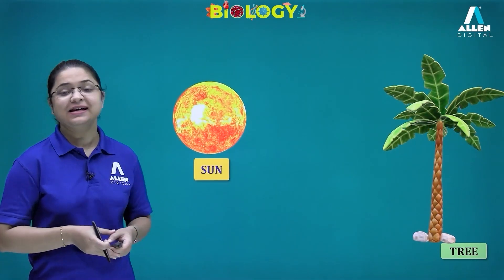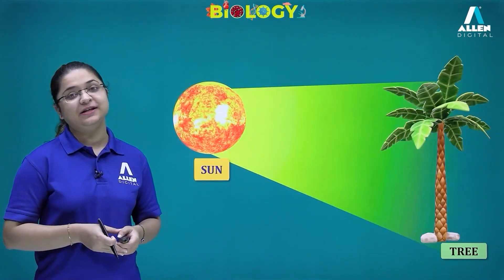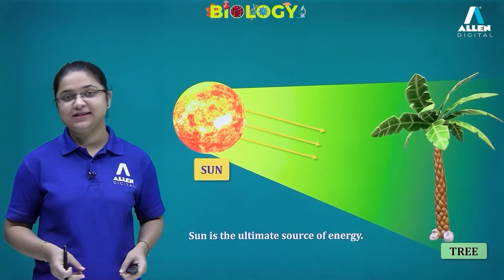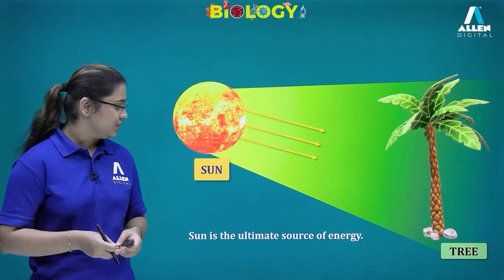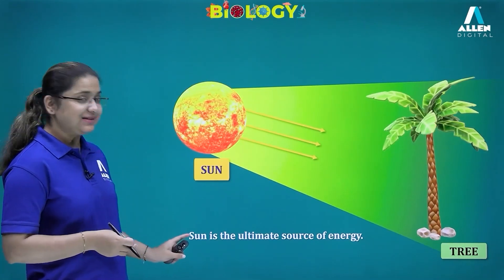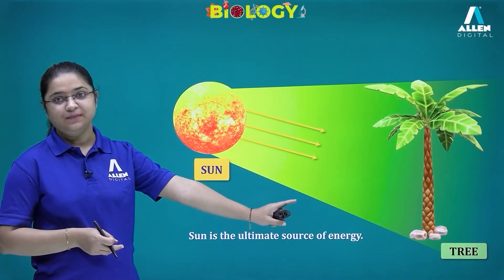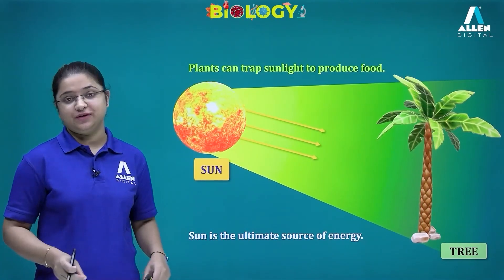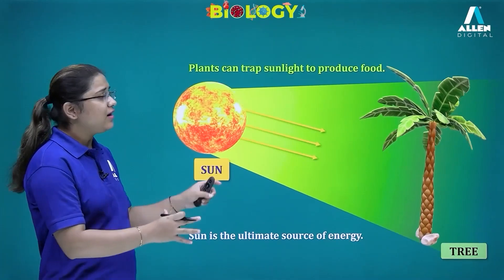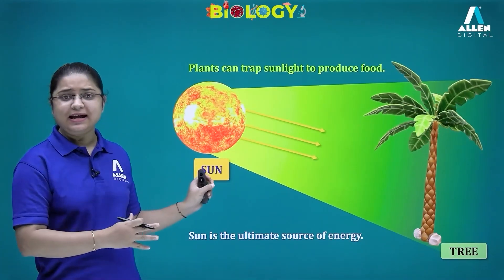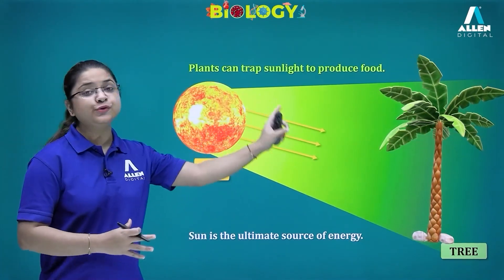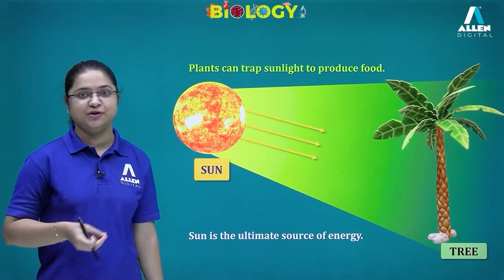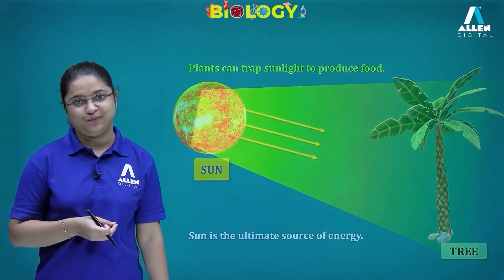Plants depend on sunlight energy for the process of photosynthesis, for the process of making food. So plants trap the light energy from the Sun. The Sun is the ultimate source of energy — that means the plants get the sunlight, they trap it, and produce food with the help of this light energy.